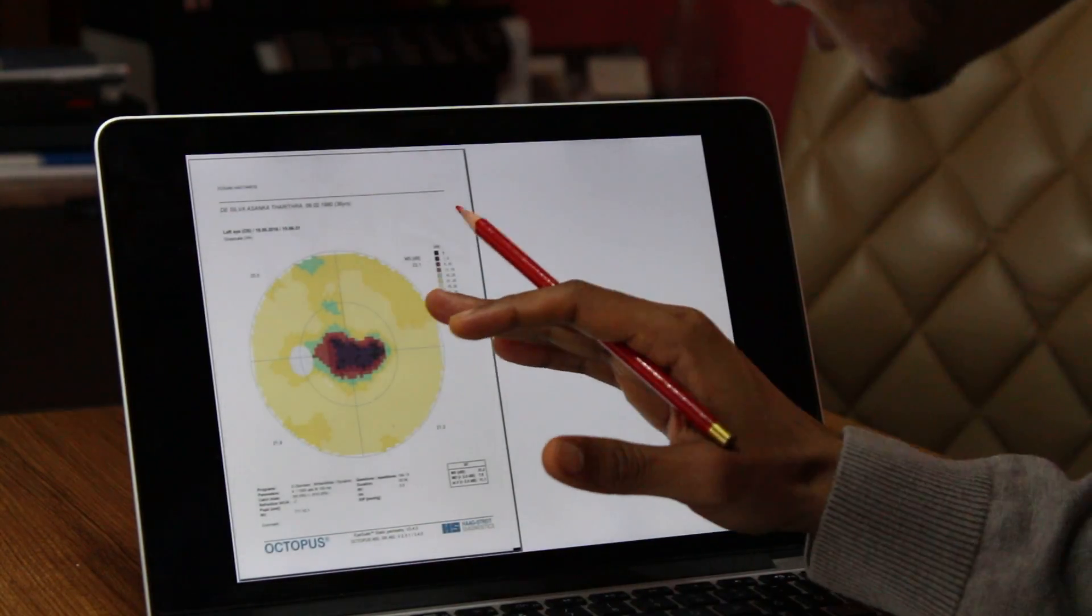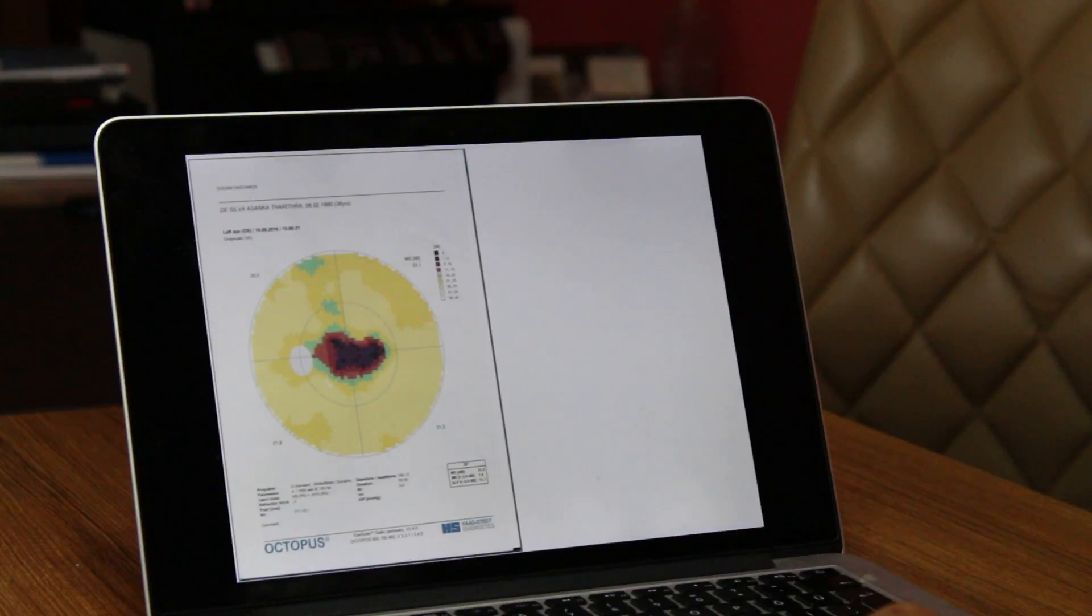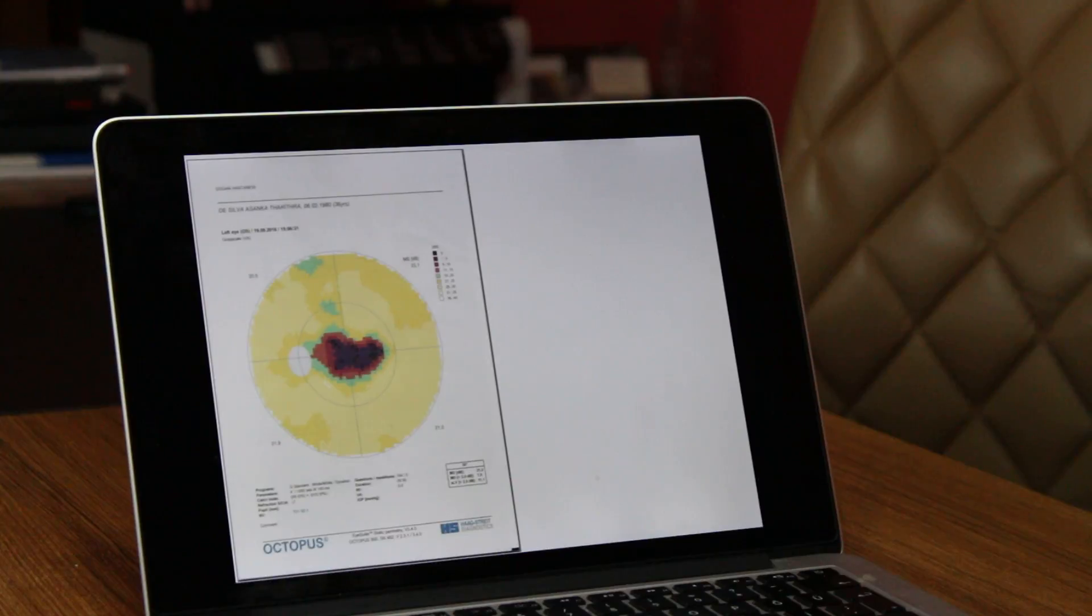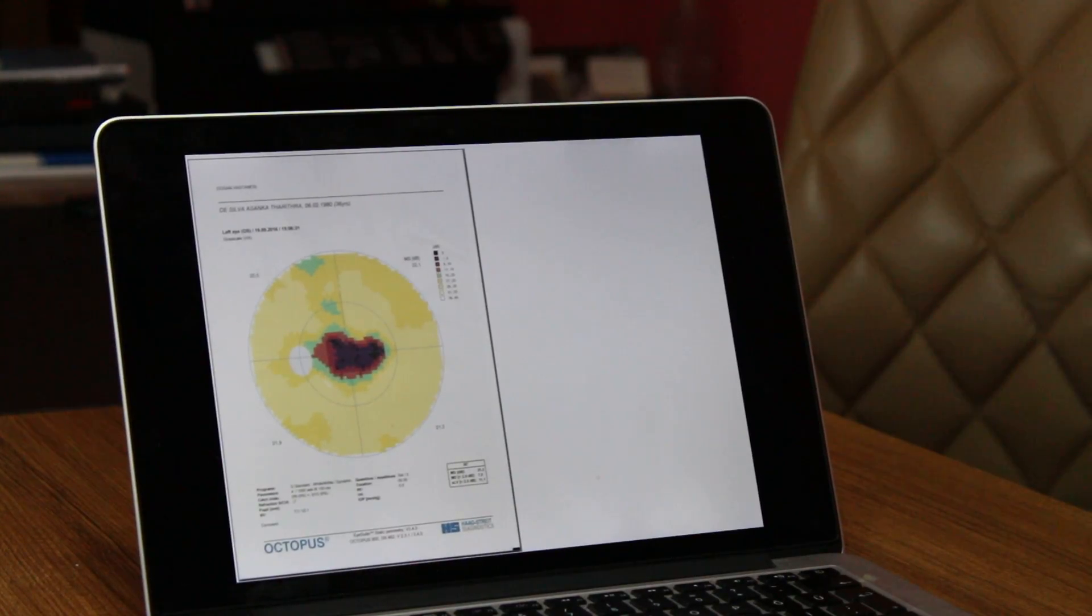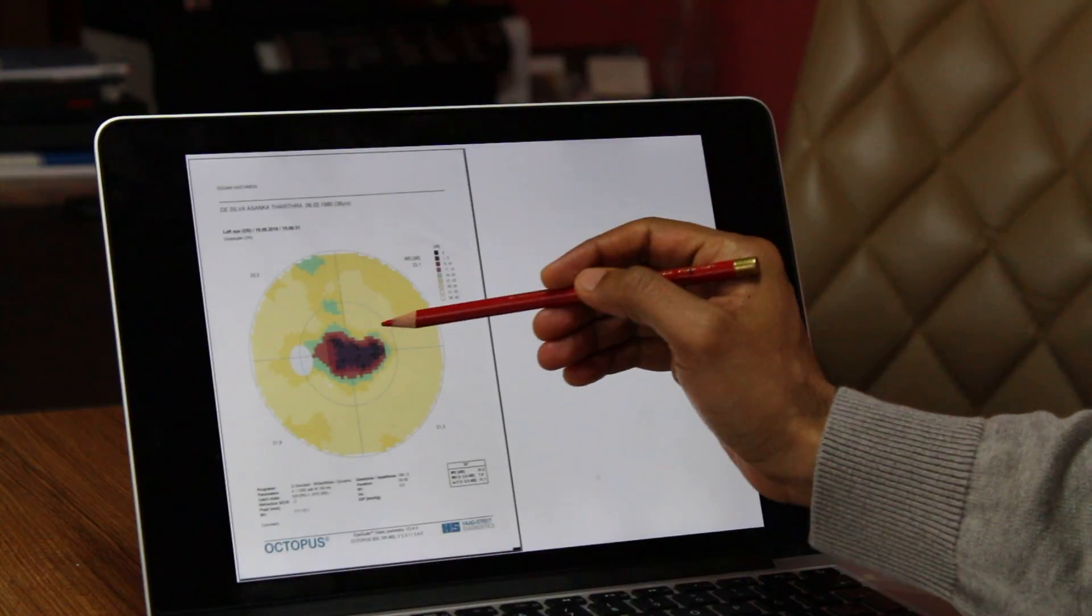Okay, so this is my left eye. Yeah, this is my left eye. Left eye wasn't too bad before, but as you can see, still I've got a lot of blind spots in the middle, a lot of dark areas in the middle.